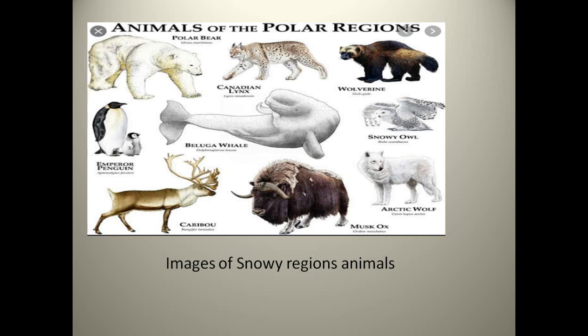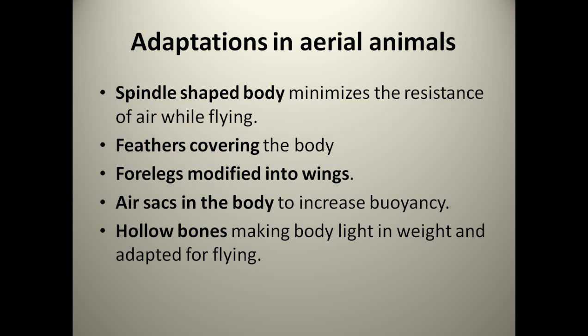Now we move to another adaptation — adaptation in aerial animals. Aerial animals have a spindle-shaped body to minimize resistance of air while flying. Their body is flat, not bulky, because a bulky body cannot fly easily. Their body is covered with feathers. Four front legs are modified into wings — from childhood we know that wings allow flight, and wings are a modification of the front legs.